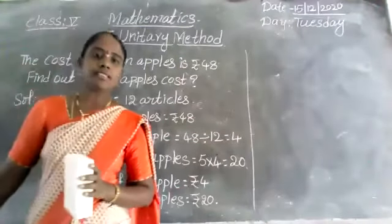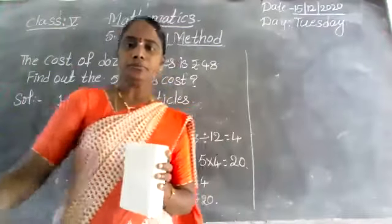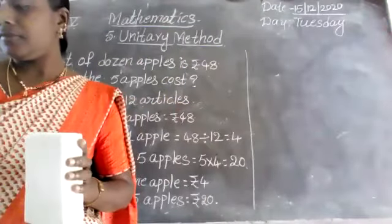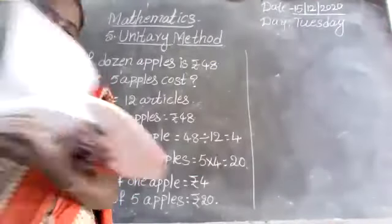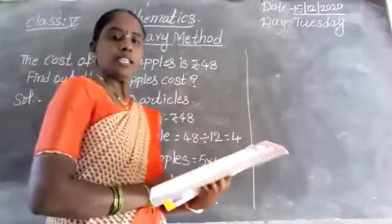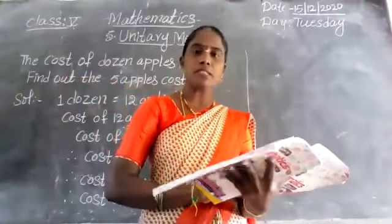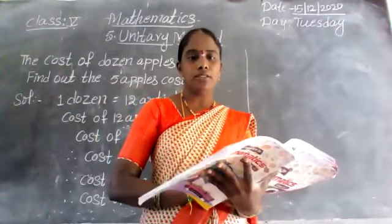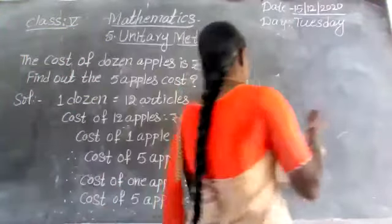Now I will explain from Exercise 5.1. Page number 64, children — take out the textbook. In your textbook, page number 64, Exercise 5.1, first problem.